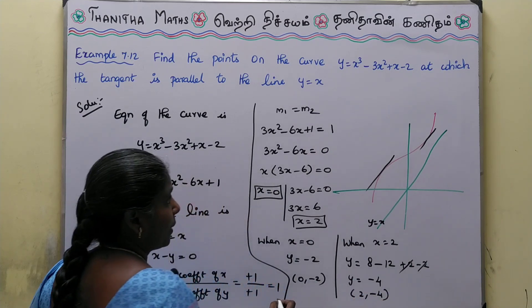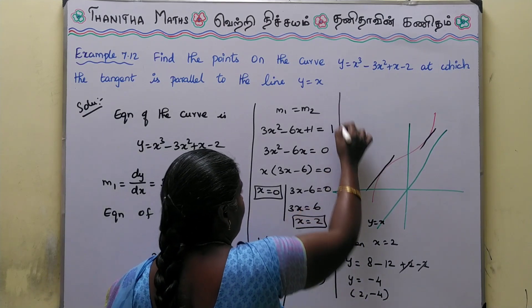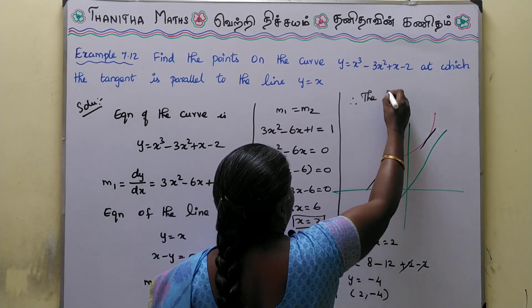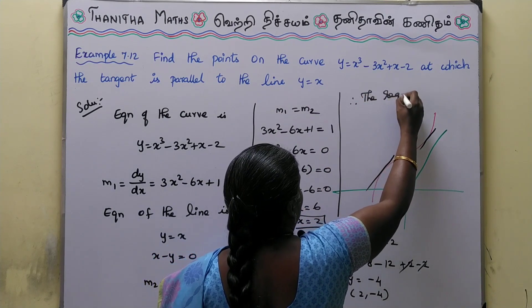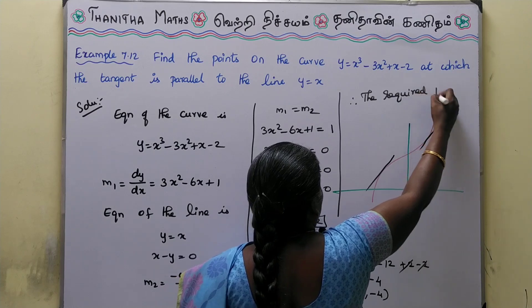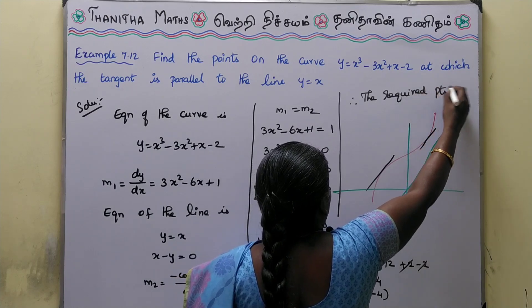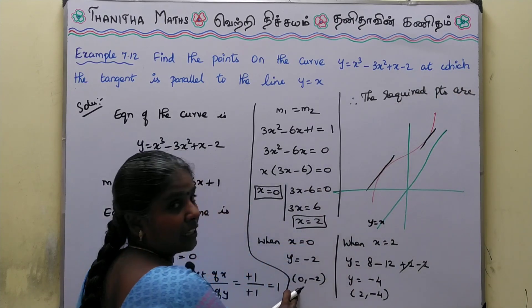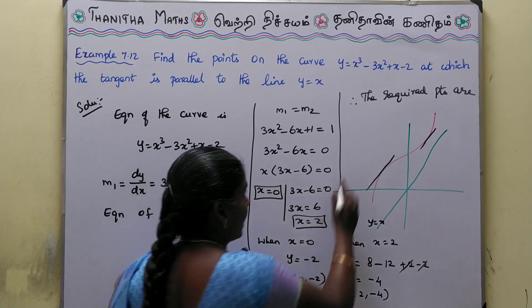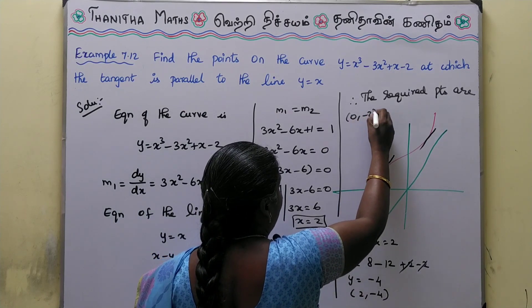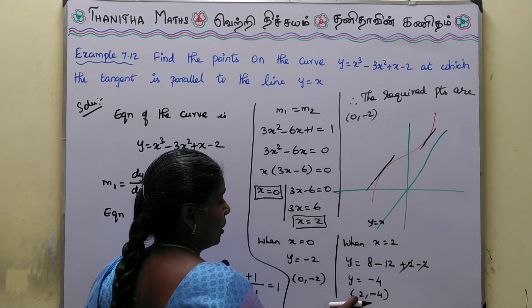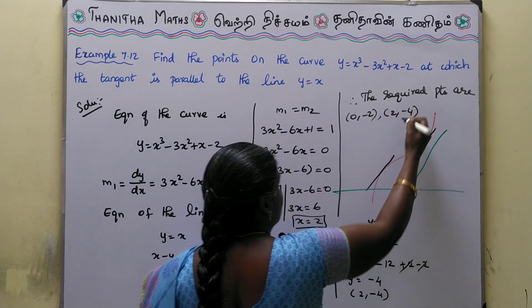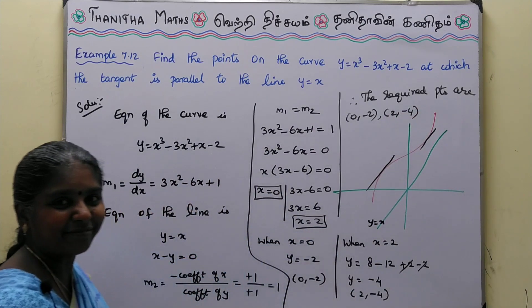Therefore, the required points are (0, -2) and (2, -4). This is our required answer.